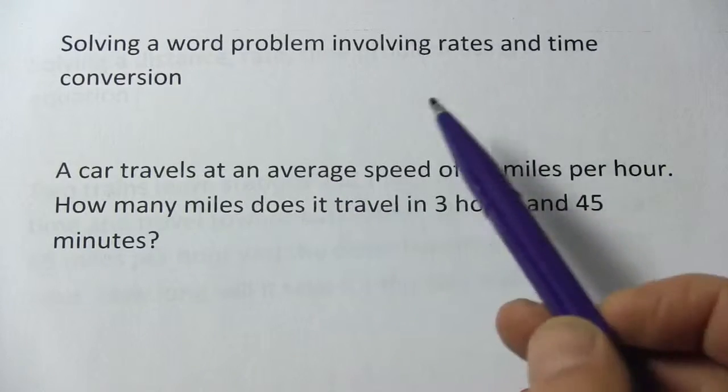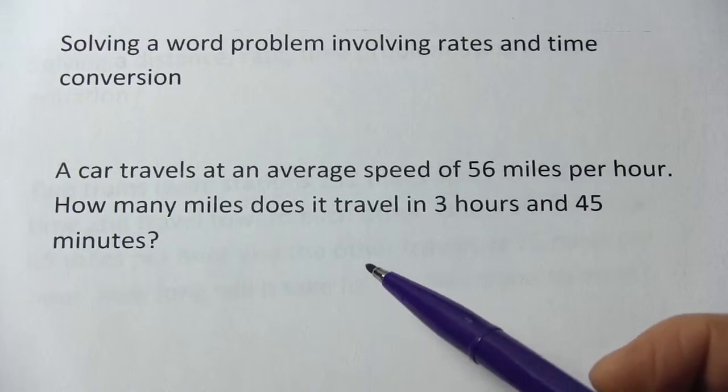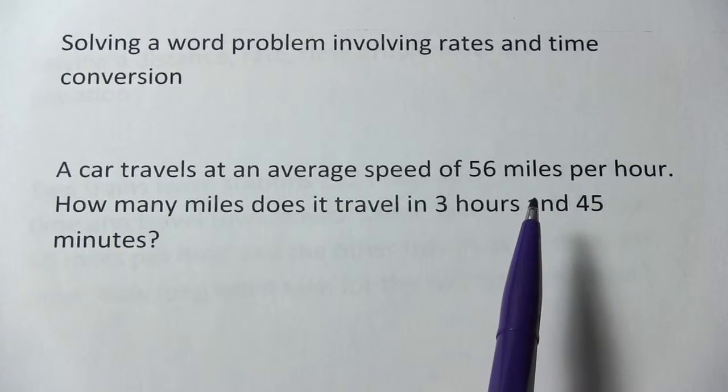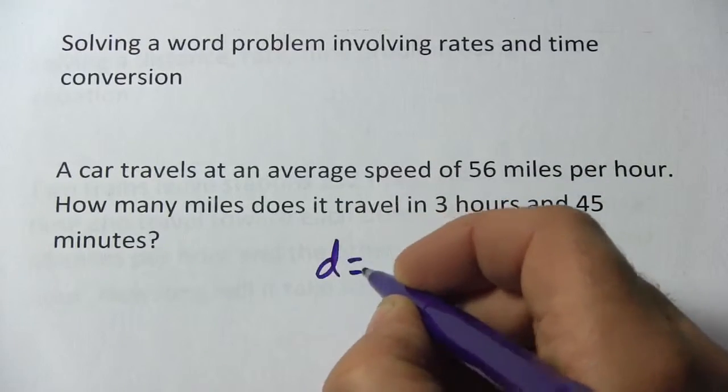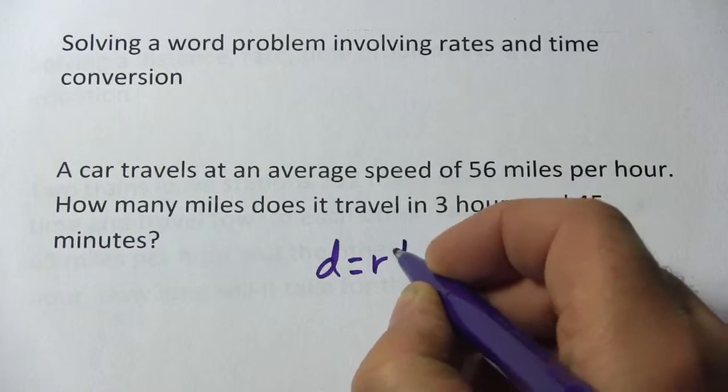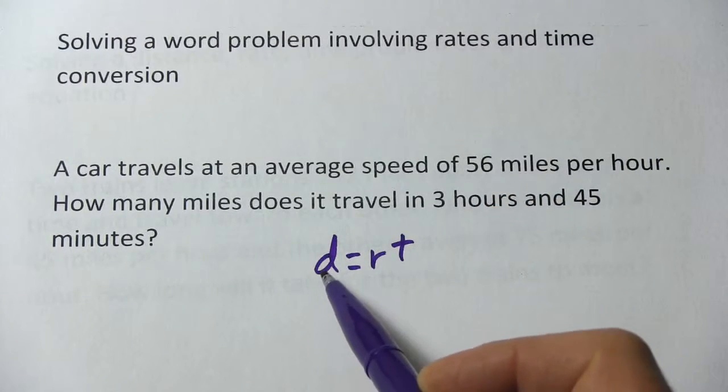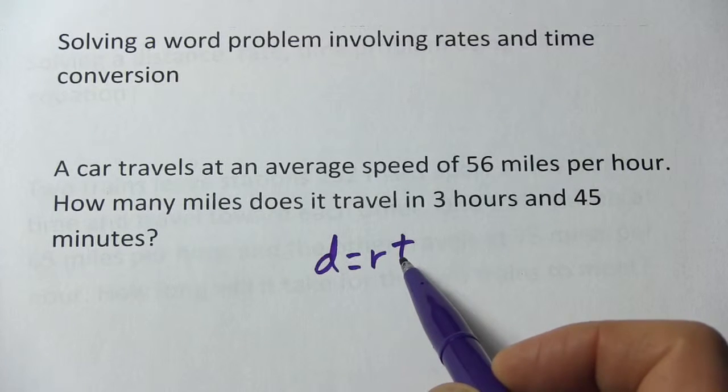Here we have a word problem involving rates and times, and when you see anything with rate and time and distance, almost always we're using the formula that some people call the DIRT formula as a way to remember it. It stands for distance equals rate times time.